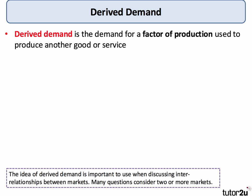Derived demand is where something is demanded, not for its own sake, but for what it can produce. The demand for a factor of production is used to produce another good or service.